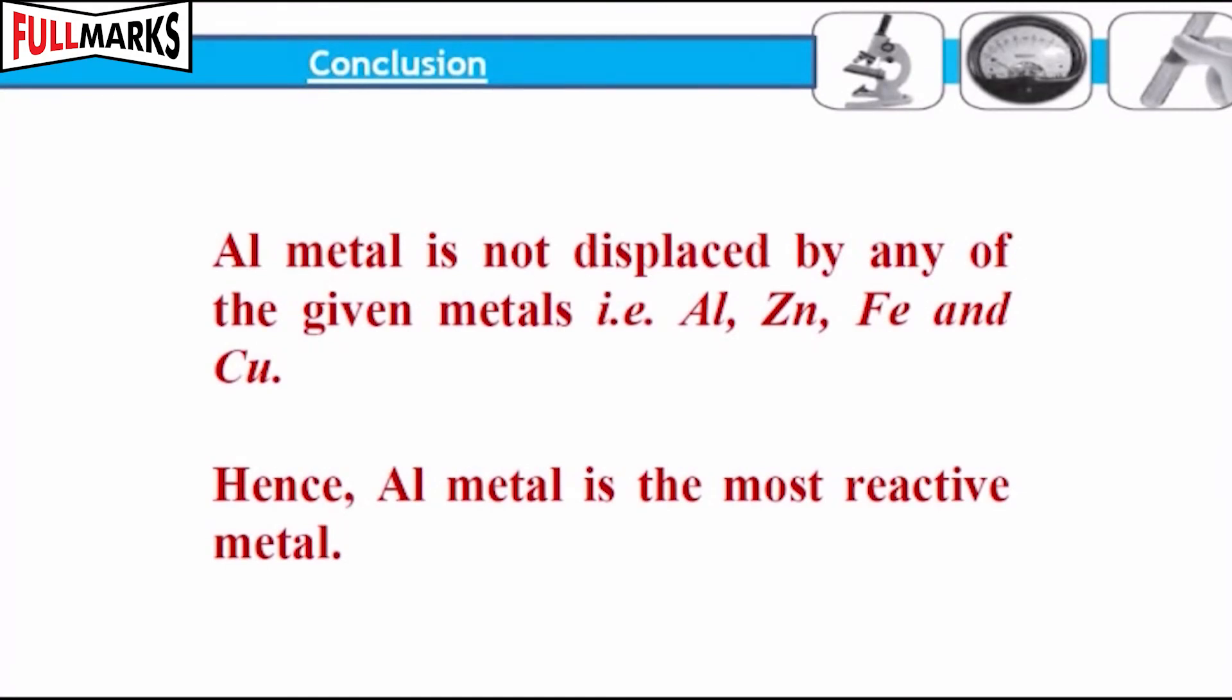Conclusion: Aluminium is not displaced by any of the given metals—zinc, iron, and copper. Hence, aluminium metal is the most reactive metal among those tested.